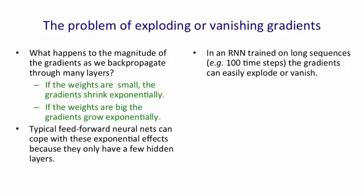But as soon as we have a recurrent neural network trained on a long sequence, for example, 100 time steps, then if the gradients are growing as we backpropagate, we'll get whatever that growth rate is to the power of 100. And if they're dying, we'll get whatever that decay is to the power of 100. And so they'll either explode or vanish.